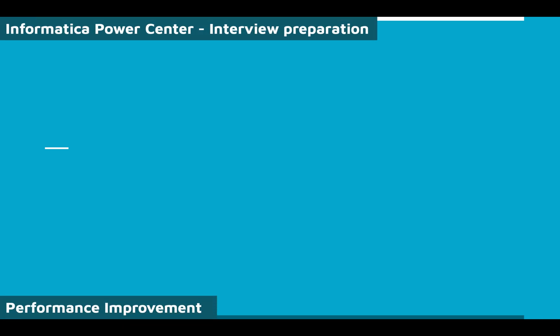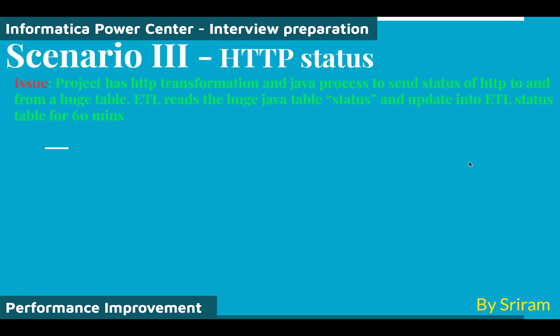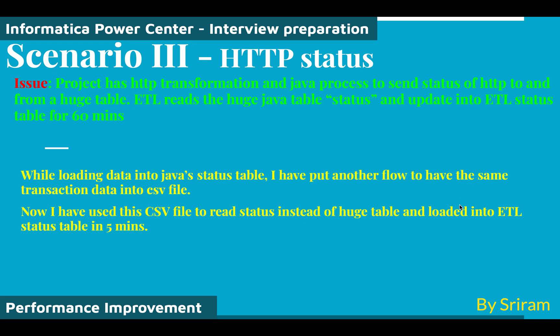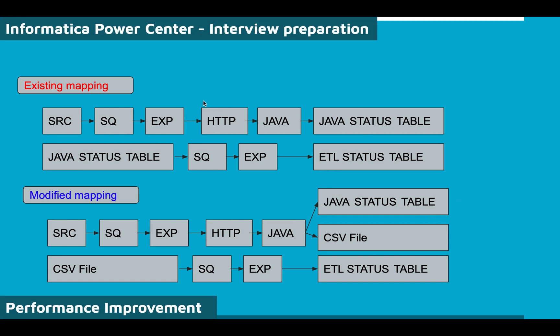The third scenario involves an HTTP transformation with a Java process that sends status to a huge Java status table. The ETL reads records from this huge Java status table and updates an ETL status table — this process was running for 60 minutes. The existing mapping has a source qualifier, an expression, an HTTP transformation with a Java process, and then loads into the Java status table. A second flow then reads from that Java status table, applies expression formatting, and loads into a retail status table.